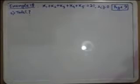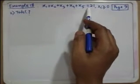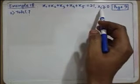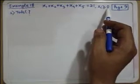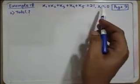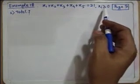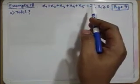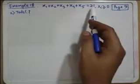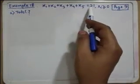Our next problem is example 18 on page 9: x1 plus x2 plus x3 plus x4 plus x5 equals 21, where each xi is a positive integer, meaning xi is greater than or equal to 0 for all i. This is an equation with five variables that add up to 21, and their values are all positive integers. We are trying to count how many different solutions there are — how many different ways these five positive integers can add up to 21.